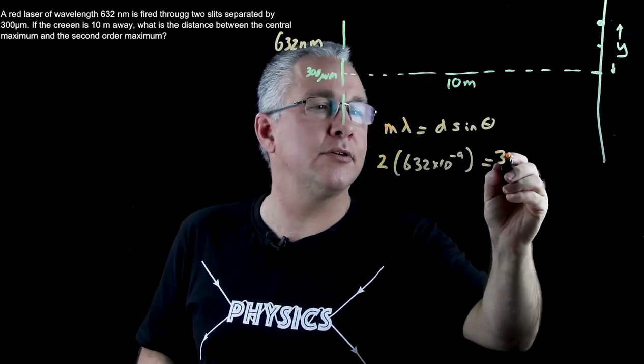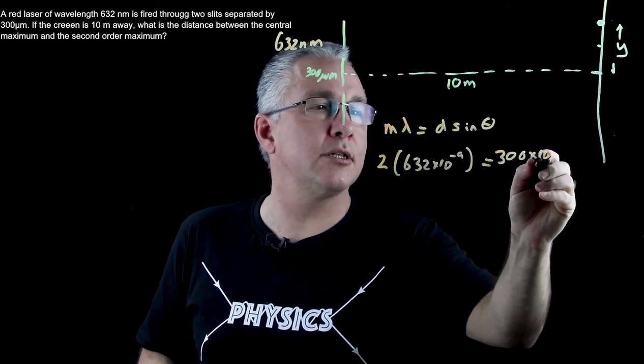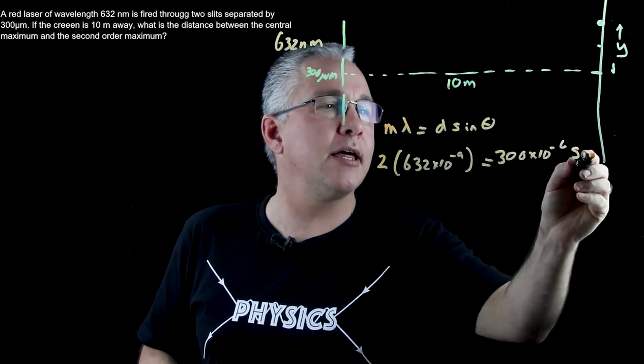Now our slit separation is 300 micrometres, so that's times 10 to the power of negative 6, and then we have sine theta. Now how do we work this out?